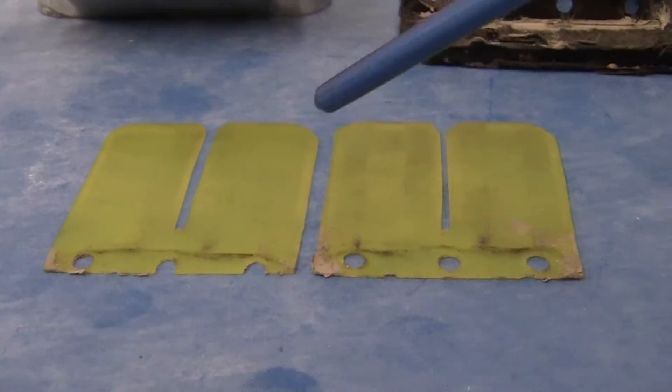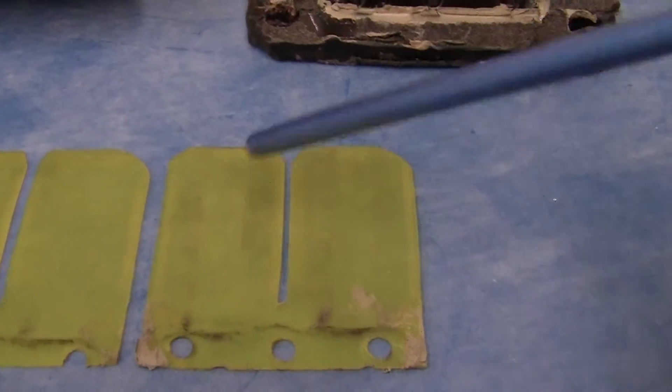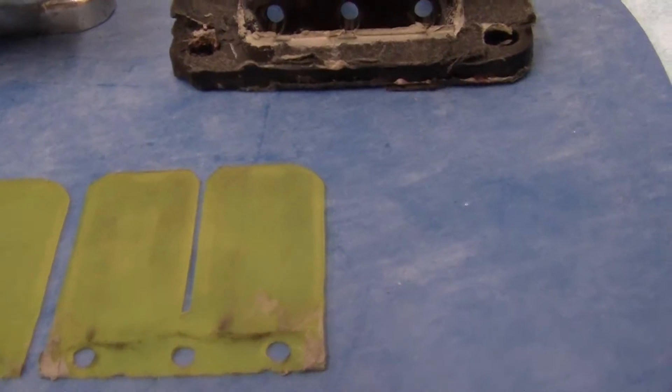Now remember this little spring right here holds them in. You can see the marks right here - they hold the reed against the cage.